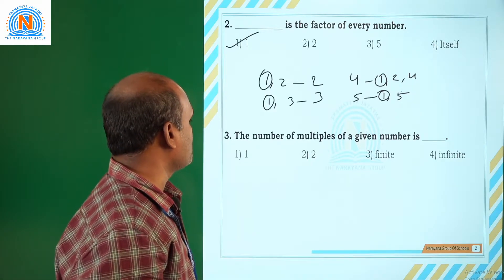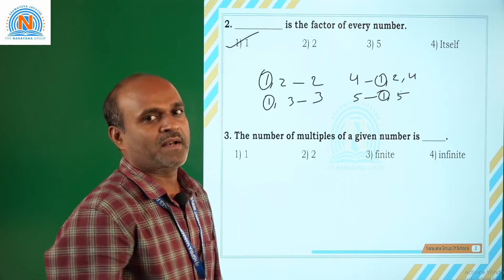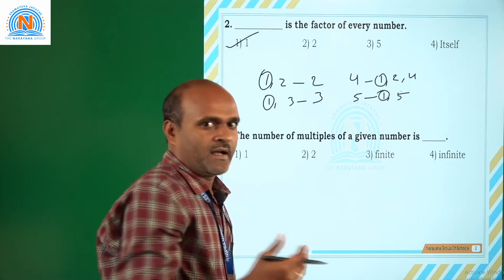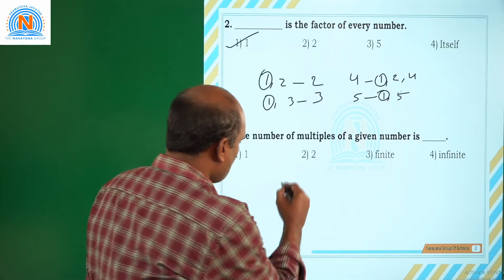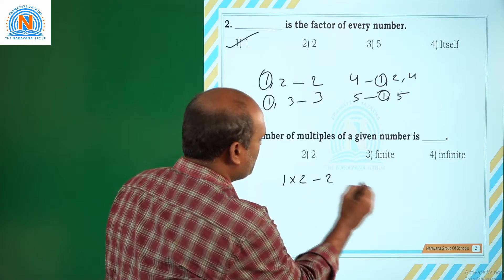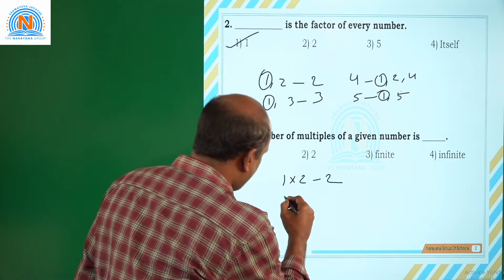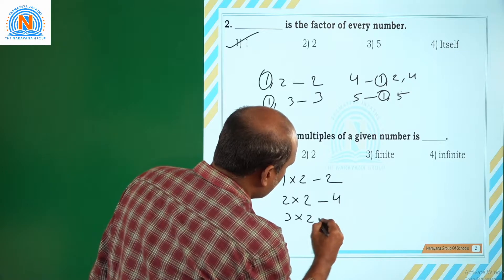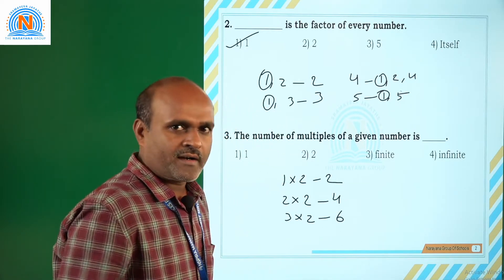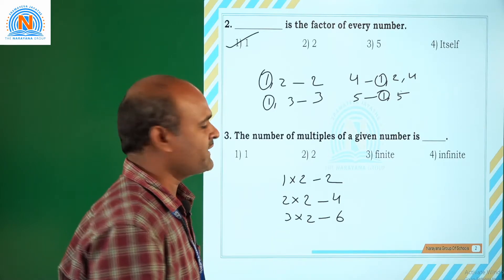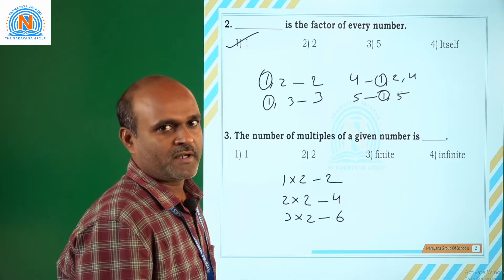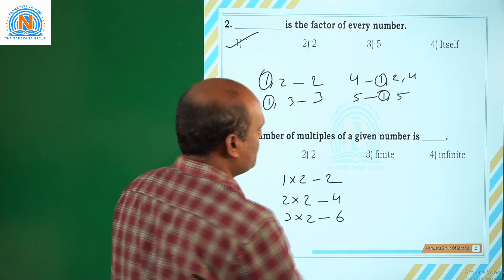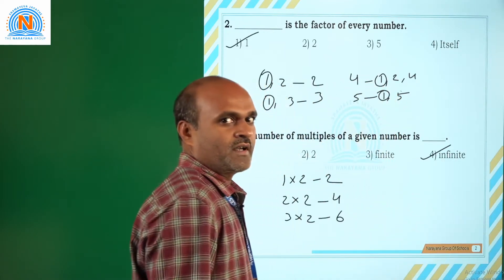Going to the third question: the number of multiples of a given number is — let me write the multiples of 2. First multiple is 1 × 2 = 2, second multiple is 2 × 2 = 4, third multiple is 3 × 2 = 6, and so on. 100 × 2 = 200, 1000 × 2 = 2000, like that. How many multiples are there? Infinite number of multiples. Every number has an infinite number of multiples. So the correct answer is option 4.